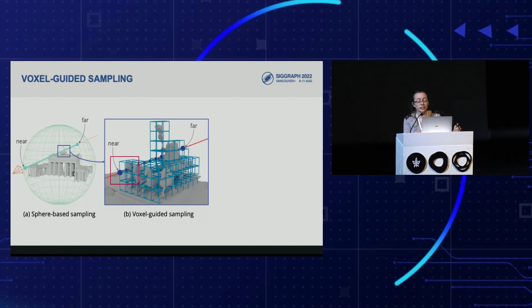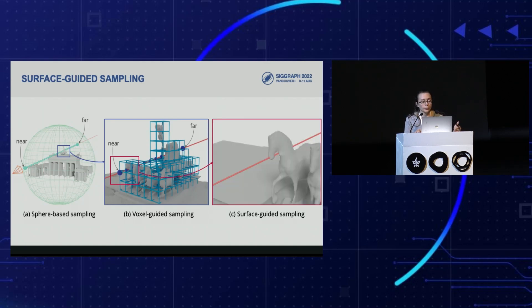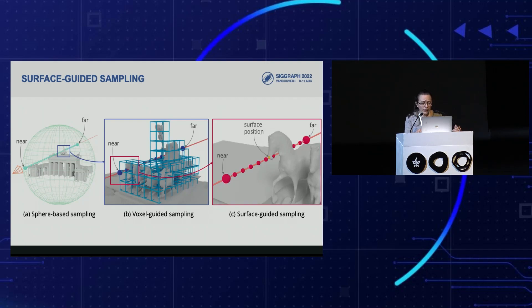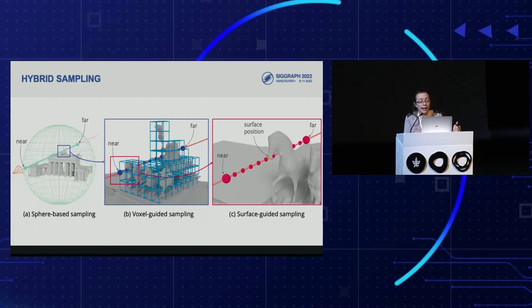To further improve sampling efficiency at fine levels, we propose a surface-guided sampling strategy that increases sampling density around the true surface. To achieve this, we periodically cache the SDF predictions from previous iterations inside the SfM sparse volume using an octree, and query the surface position from this cache at each training iteration. Our method uses a hybrid voxel and surface-guided sampling technique: we first leverage the sparse point clouds from structure-from-motion, then generate surface-guided samples based on the current state of optimization.